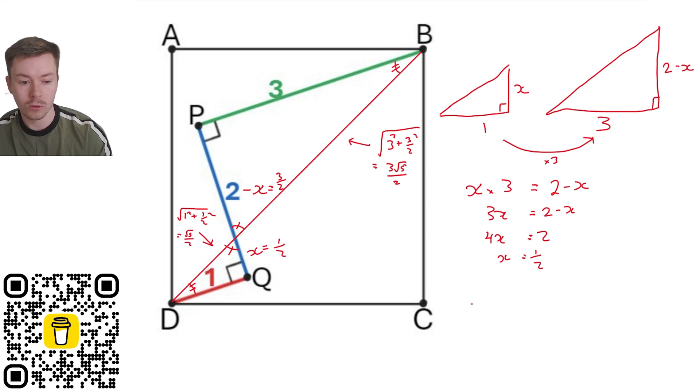So the full length of the diagonal, let's call it BD, is equal to 3 root 5 over 2 add root 5 over 2 gives you 4 root 5 over 2, which is equal to 2 root 5. Now, from there we've got the length of the diagonal. If we call the side length of our square S, so side length of the square is S. Now what we're looking for really, the area of the square is S squared.